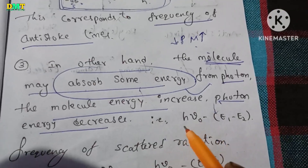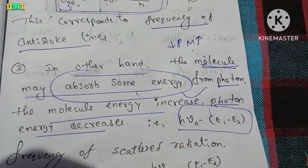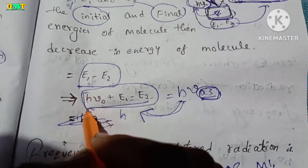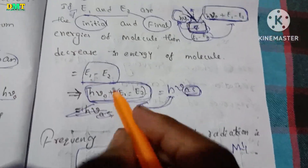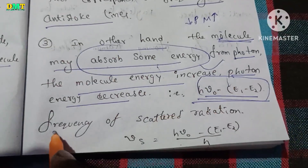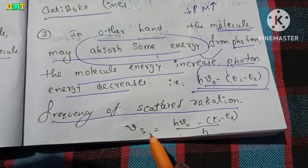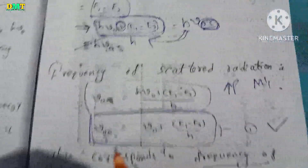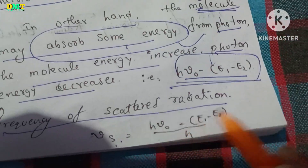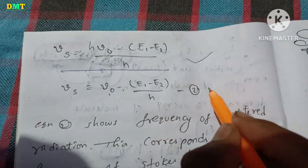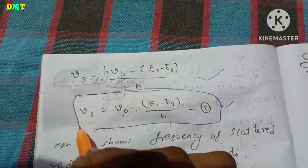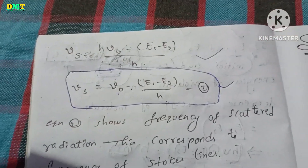So the scattered photon energy is H·mu₀ minus E1 minus E2. Here we go with H·mu₀ minus (E1 minus E2) — this gives the Stokes lines. After cancelling H, the Stokes frequency is: mu_s equals mu₀ minus (E1 minus E2) divided by H. This is equation 2 for the Stokes line frequency.